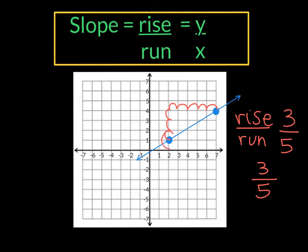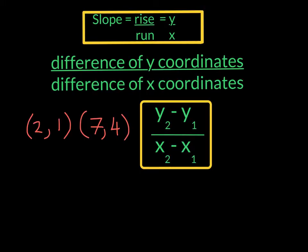In which case we can use two points such as this one (2, 1) and this one over here (7, 4) to calculate the slope. We said that the slope was the difference of the y coordinates divided by the difference of the x coordinates. And we're going to use this equation right here to help us calculate along with our two points.